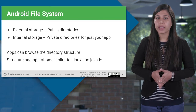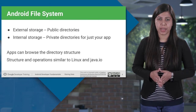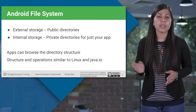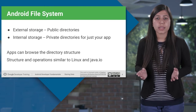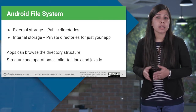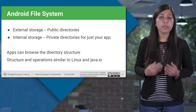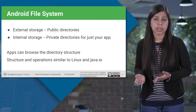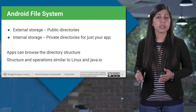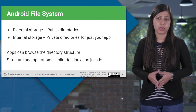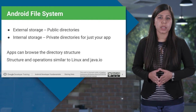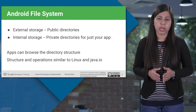All Android devices have two file storage areas: internal and external storage. These names come from the early days of Android when most devices offered built-in non-volatile memory (internal storage), plus a removable storage medium such as micro SD cards (external storage). The external storage system consists of public directories, whereas internal storage contains private directories meant to be used by that specific app only.